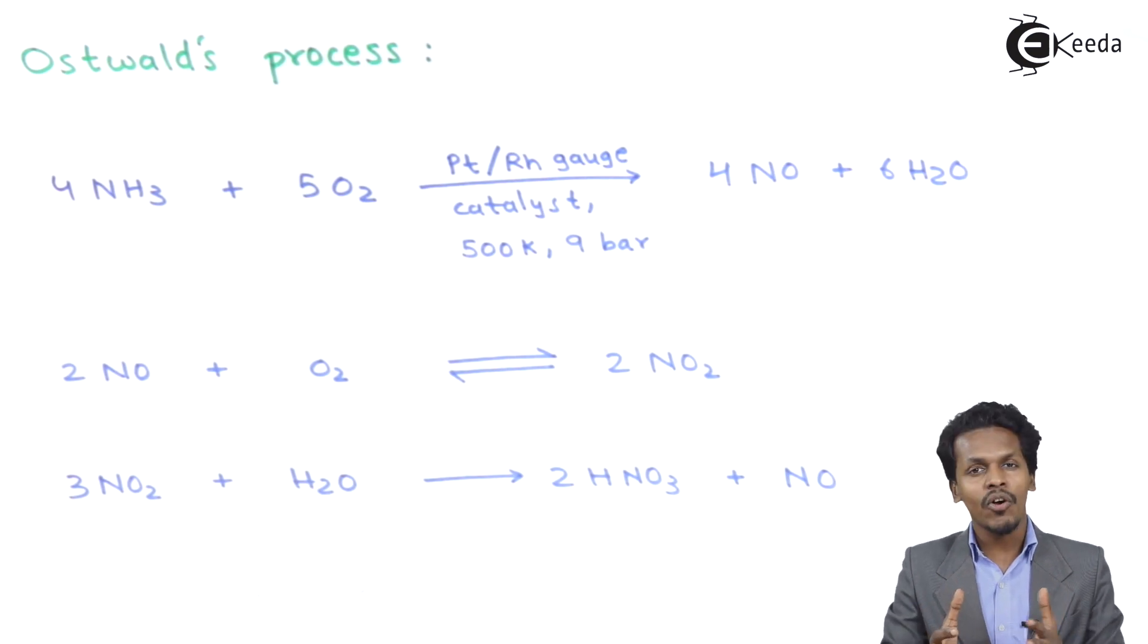This 68% nitric acid can be further concentrated with the help of H2SO4 to obtain 98% nitric acid. These are the two methods from which we can prepare nitric acid.